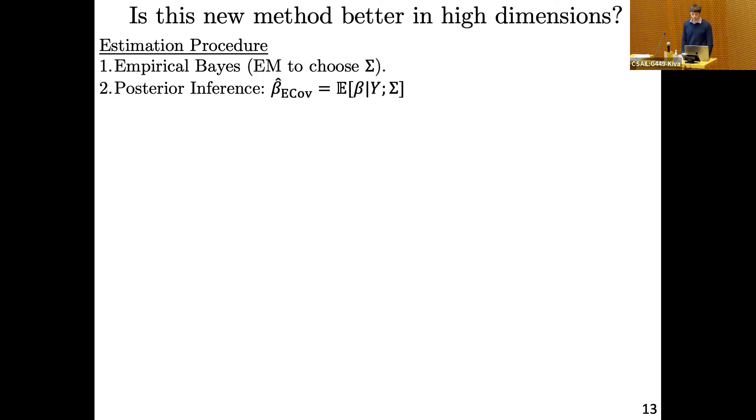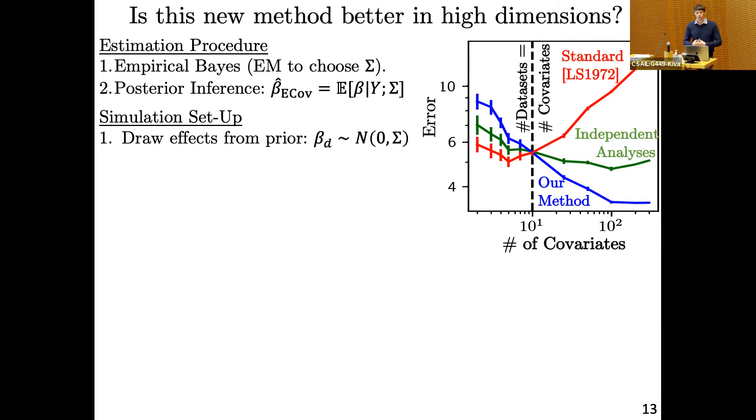So now we have a method that gives us an estimate we can compute any time we have a collection of G different data sets assuming they have the same set of covariates. The first step is to use empirical Bayes to choose an estimate of the matrix sigma, and then we do posterior inference using the conjugacy equation to get our estimate beta-hat u-cov. But how do we know this is working? For each different number of effects, I randomly chose values sampling from a normal distribution with a chosen covariance matrix sigma, then sampled data sets y from the likelihood, and computed the sum of squared errors across all the covariates, repeating this many times. The y-axis is the mean squared error across many replicates — this is the risk, r(beta-hat, beta), which in statistics we know is the large-sample average error.